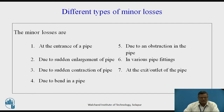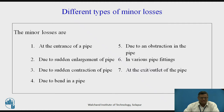There are different reasons why minor losses occur. The first one is at the entrance of a pipe. The second one is due to sudden enlargement of pipe. Third, due to sudden contraction of pipe. The fourth, due to bend in a pipe. The fifth, due to obstruction in the pipe. Sixth, in various pipe fittings. And the last one is at the exit or outlet of the pipe.